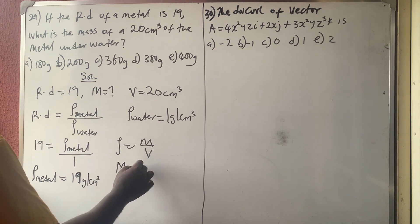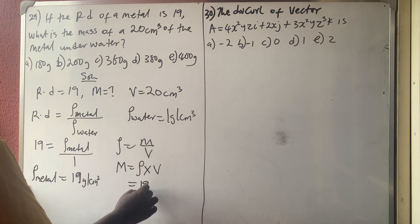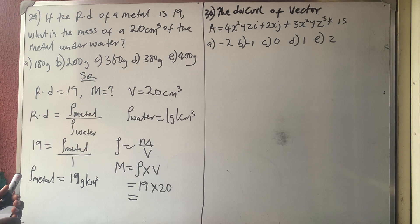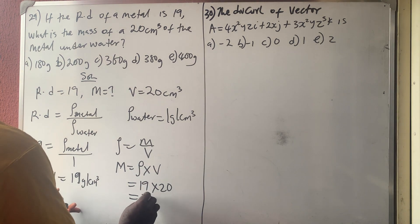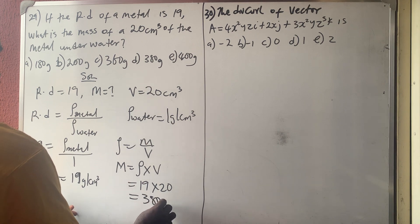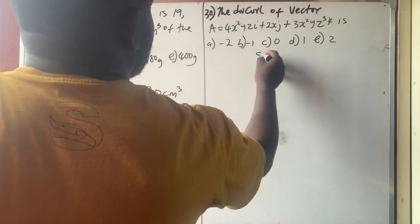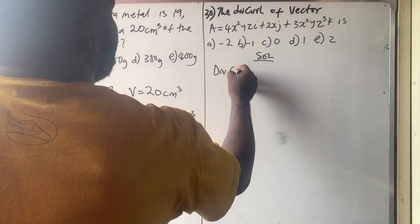We know that density equals mass over volume, so the mass we are looking for is density times volume, which is 19 times 20, giving you 380 grams. So the answer is D.